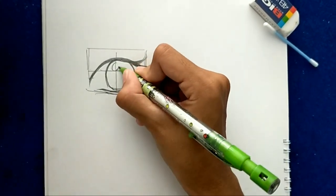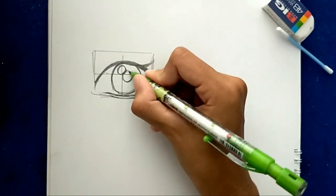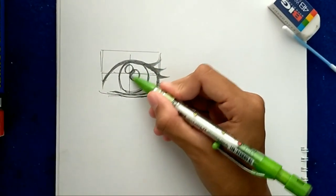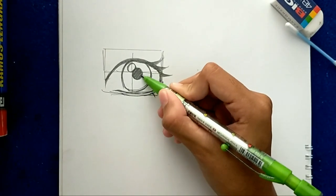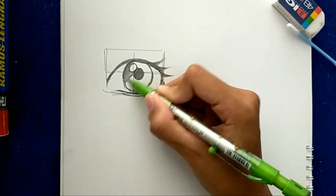Now make two small circles like this and don't forget to color it with your pencil. Half of the eyeball should be black.